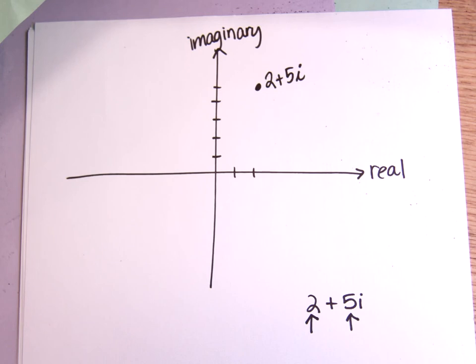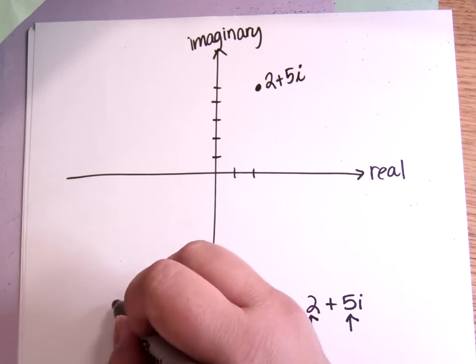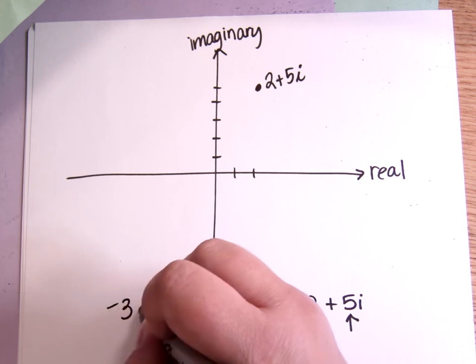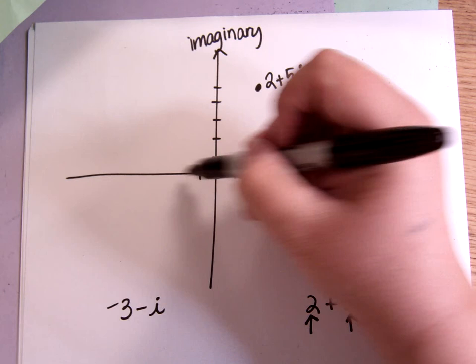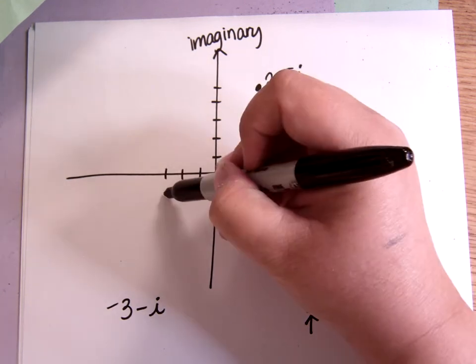Okay, or maybe I go, let's say, negative 3 minus i. Okay, that would mean I'd go 3 to the left, 2, 3, and down 1.